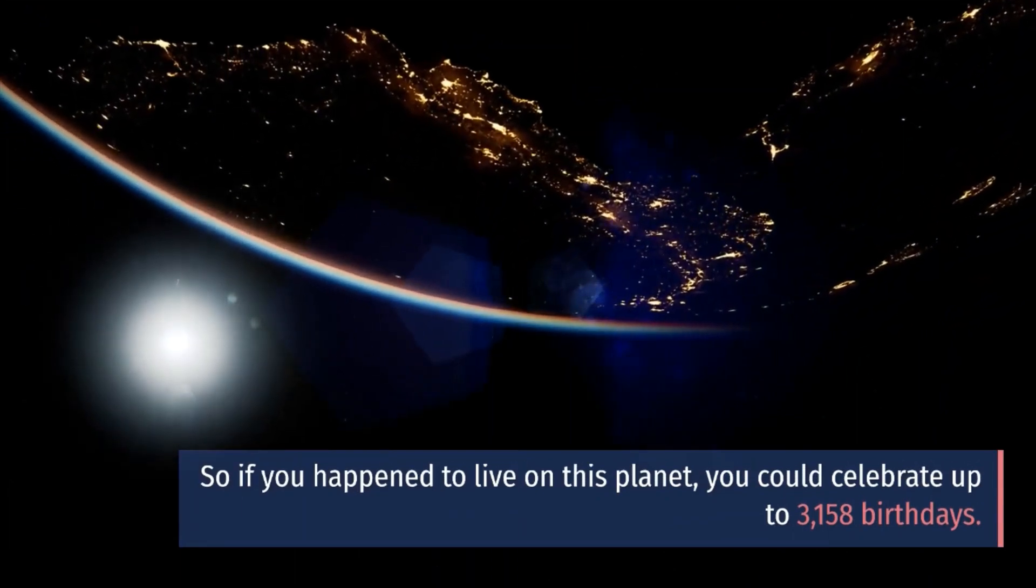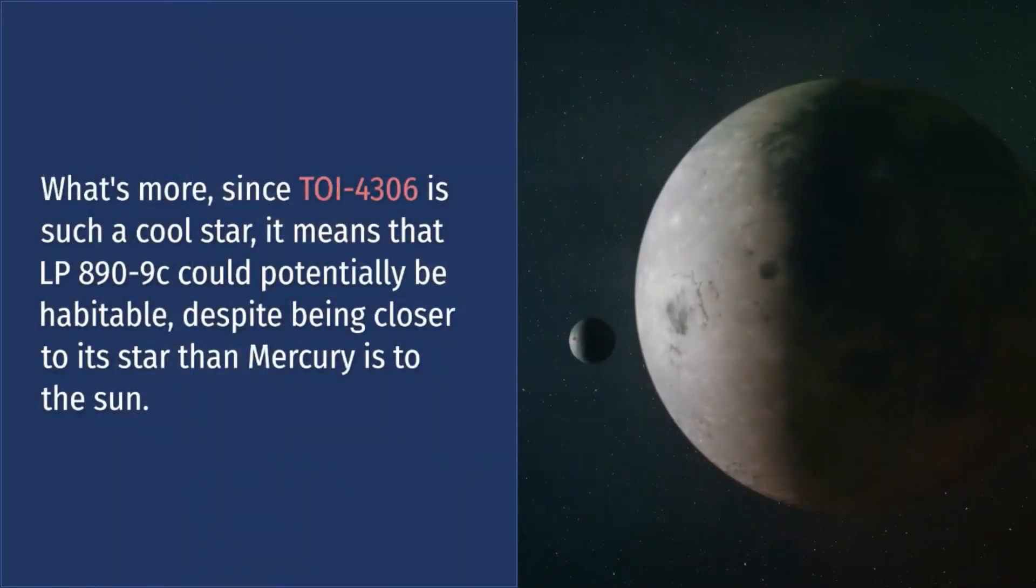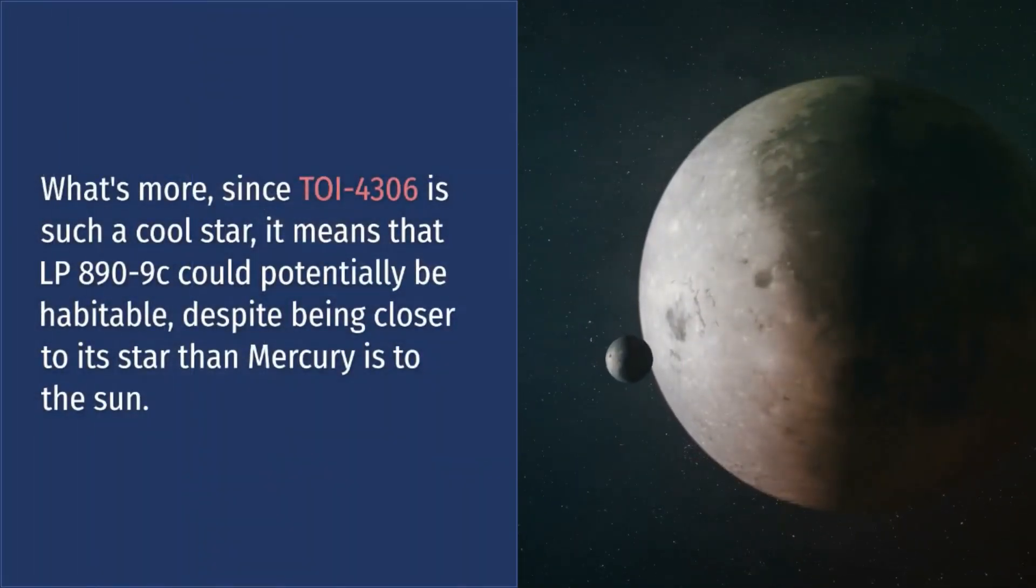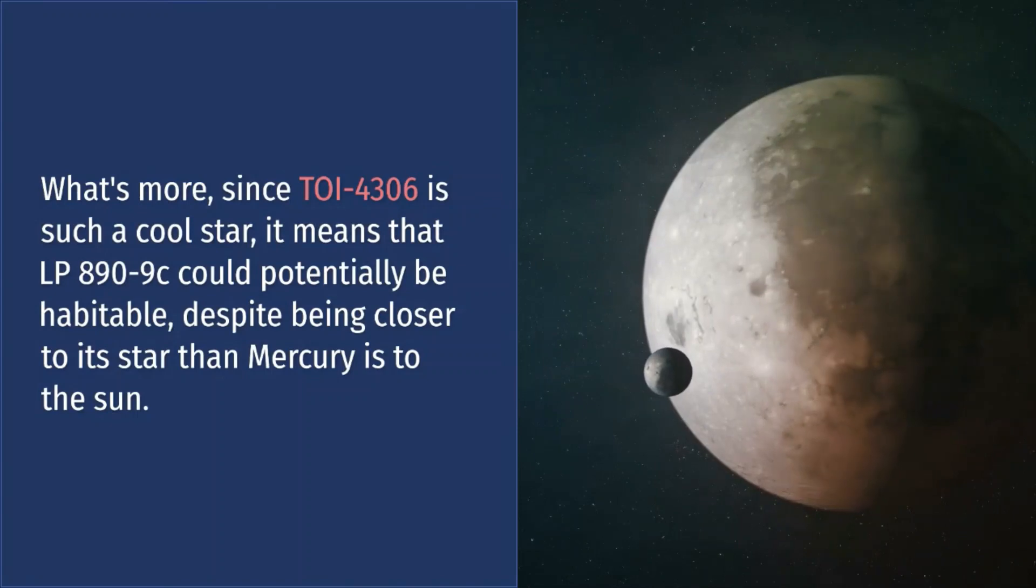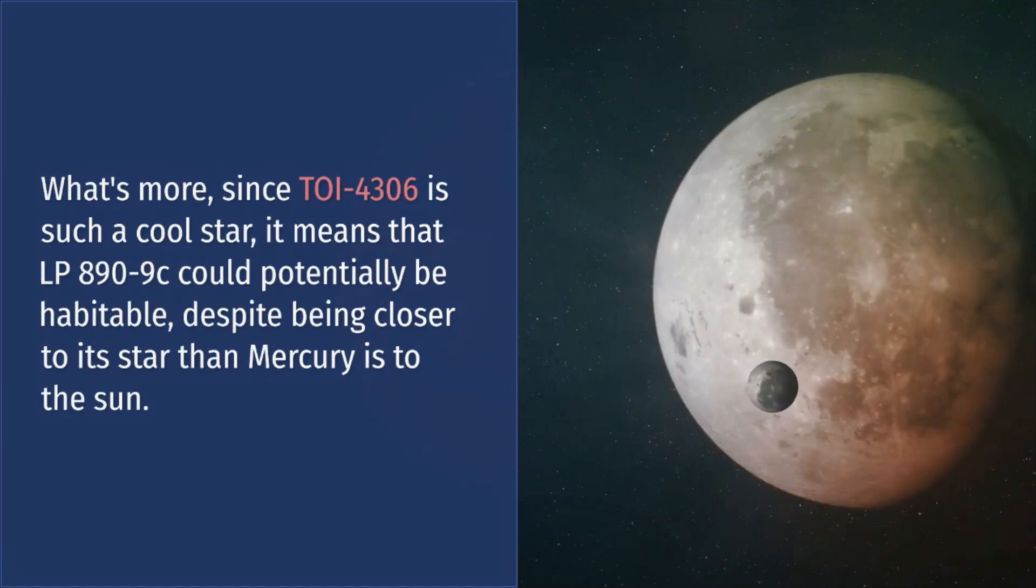So if you happen to live on this planet, you could celebrate up to 3,158 birthdays. What's more, since TOI-4306 is such a cool star, it means that LP 890-9c could potentially be habitable despite being closer to its star than Mercury is to the sun.